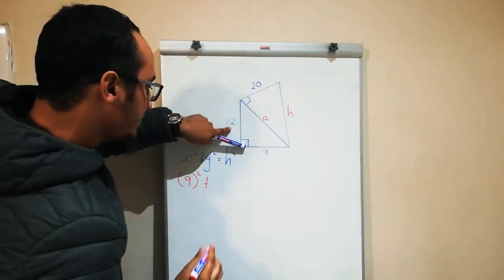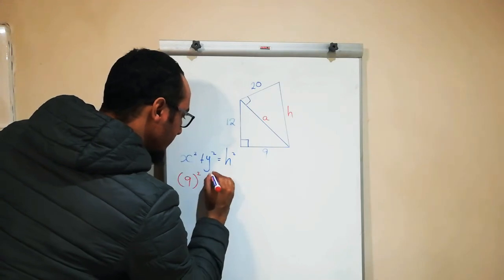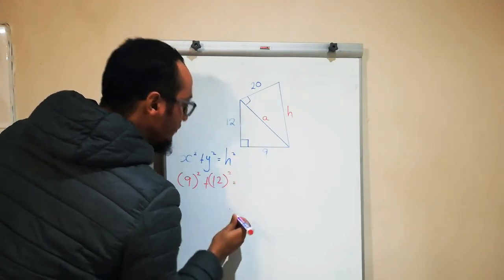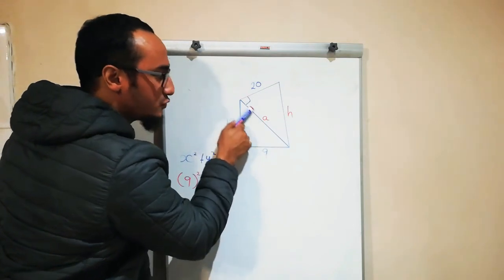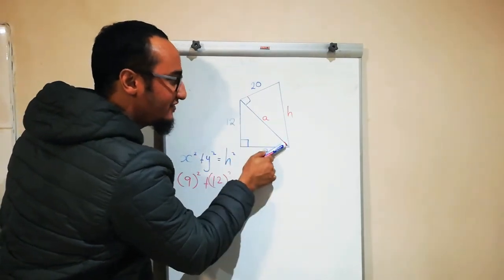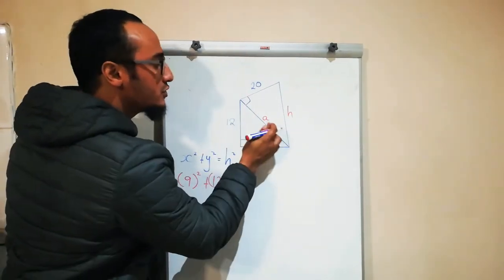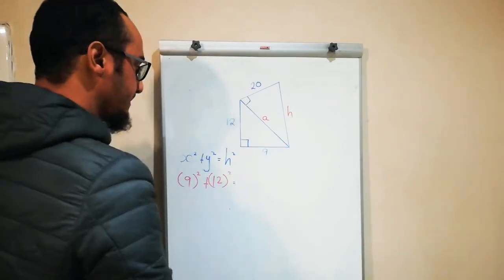So the bottom I would say is x, so that is 9 squared. The value of y is 12 squared, and that would be equal to h. But remember, not this h—the h which would be my hypotenuse of my first triangle, also known as the value of a.